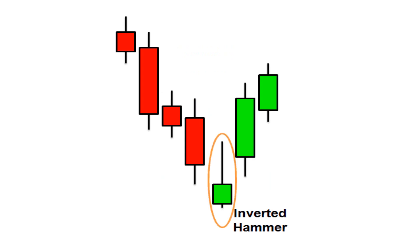Conditions for inverted hammer confirmation: First condition, inverted hammer should form after a downtrend. Second condition, upper shadow which should be at least twice the length of the real body. Third condition, real body should be bullish.